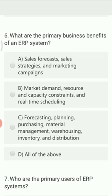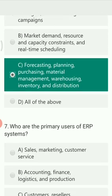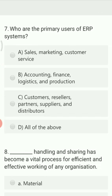The next MCQ is: what are the primary business benefits of an ERP system? Option A is sales forecasts, sales strategies, and marketing campaigns. Option B is market demand, resource and capacity constraints, and real-time scheduling. Option C is forecasting, planning, purchasing, material management, warehousing, inventory, and distribution. Option D is all of the above. The right answer is Option C.